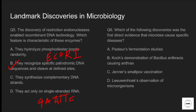Question six: which of the following discoveries was the first direct evidence that microbes cause specific diseases? Option A: Pasteur's fermentation studies. Option B: Koch's demonstration of Bacillus anthracis causing anthrax. Option C: Jenner's smallpox vaccination. Option D: Leeuwenhoek's observation of microorganisms. The correct answer is option B. Koch provided experimental proof linking Bacillus anthracis to anthrax, and that formed the basis for Koch's postulates.